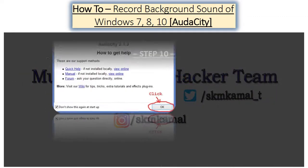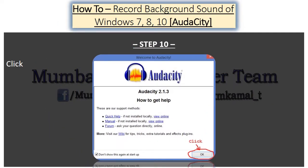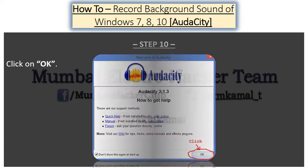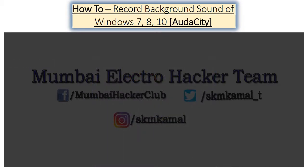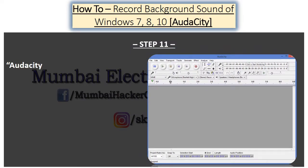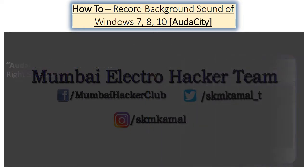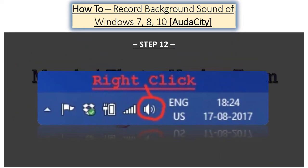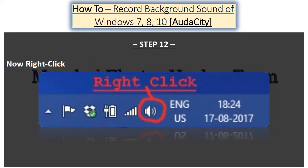Step 10: Click on OK. Step 11: Audacity will open as shown on the right side of the screen. Step 12: Now right-click on your Windows volume icon as shown below.